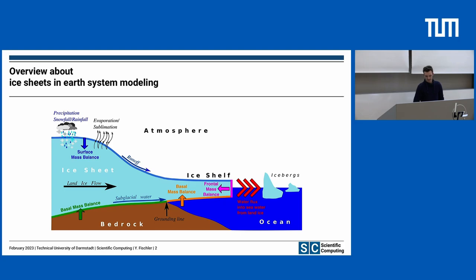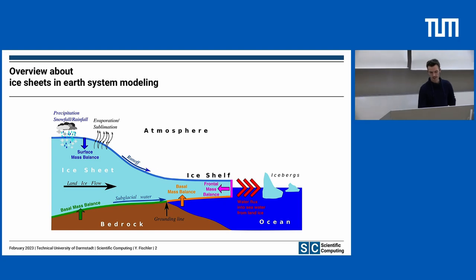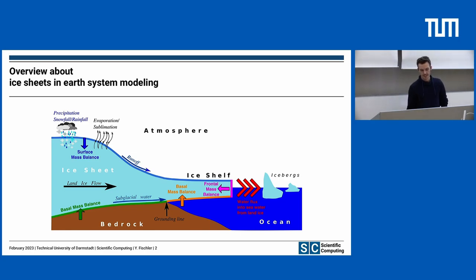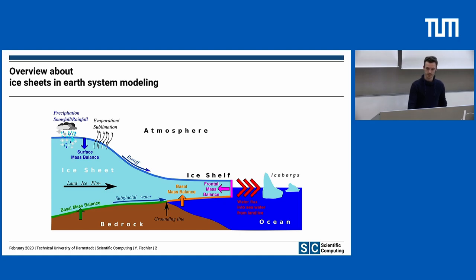At the bottom of the ice sheet we have the interesting part for this talk. The bottom of the ice sheet is the warmest part, and here we have melting effects. These melting effects produce subglacial water which we simulate in a subglacial hydrology model.